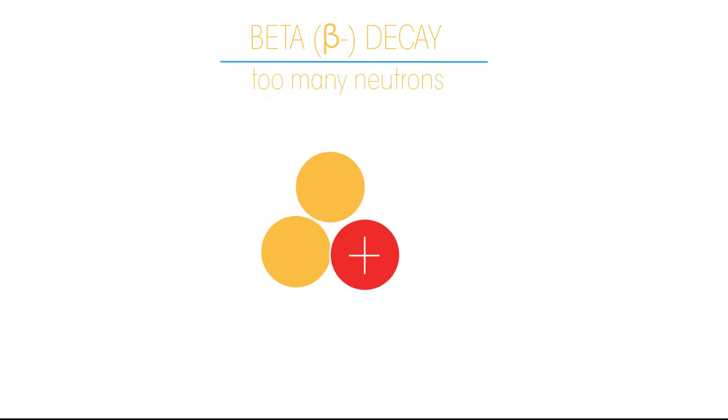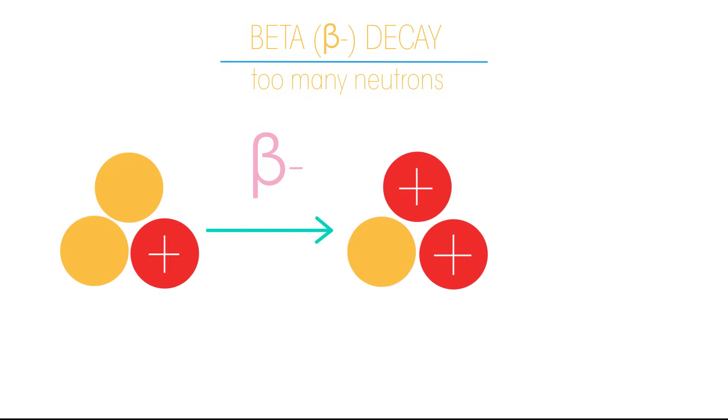When an isotope has too many neutrons, it decays by beta minus decay. A neutron changes into a proton and an electron. The proton is retained by the atom while the electron is lost. The lost electron is high energy and is called a beta particle.